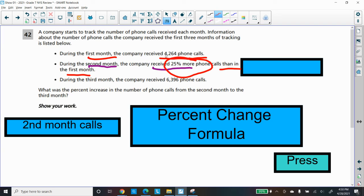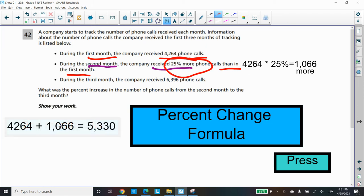I would take my calculator and multiply 4,264 times 25% to see what percent of those calls they received that were more. That gave me 1,066 more additional calls that they got. How many calls did they get in the second month? They got the 1,066 additional, and they had more than the 4,264. If we add those two up, that'll give us a total of 5,330 calls. So in the second month, they got 5,330 calls. Would have been nice if they would have said that, but they expect us to work it out.